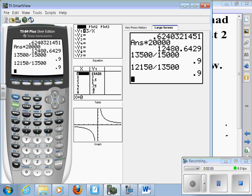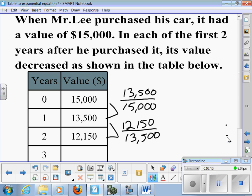So each year the car is only worth 90% of what it was the year before. The first year initially was worth $15,000. So we can say the value of the car is equal to 15,000 times 0.9 raised to the t, where t would represent the number of years since he bought it.